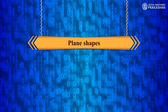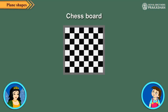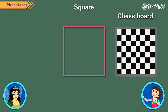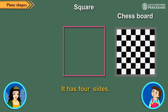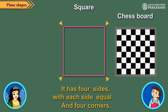Plane Shapes. Look at this chess board, Tina. Its shape is the same as that of a square. Right. It has four sides, with each side equal, and four corners.